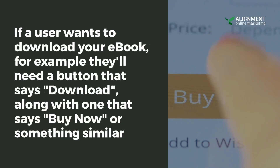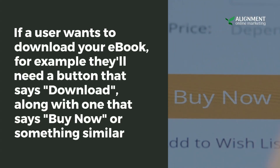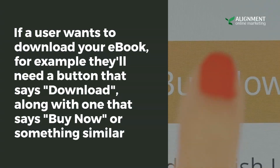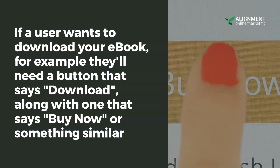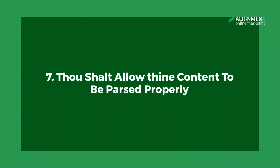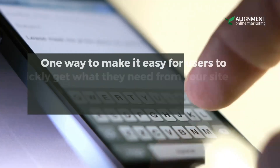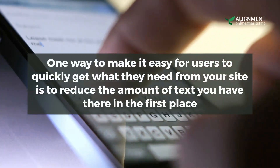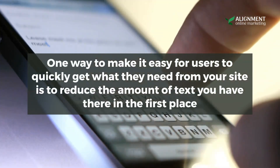Six: thou shalt make all buttons touchable. If a user wants to download your ebook, for example, they'll need a button that says 'Download' along with one that says 'Buy Now' or something similar.